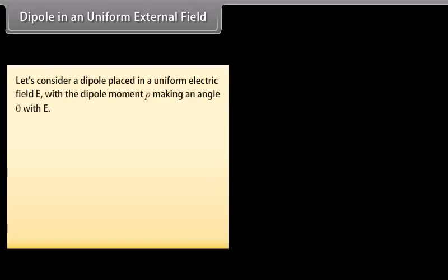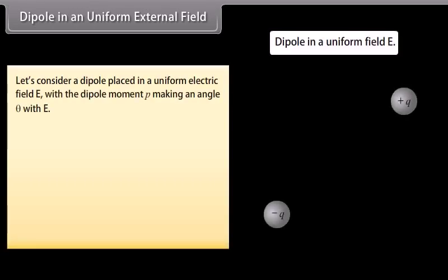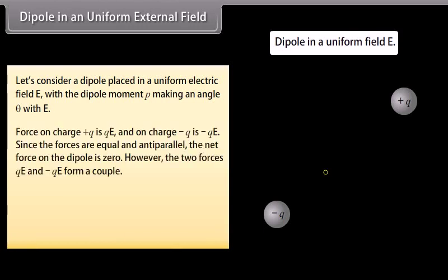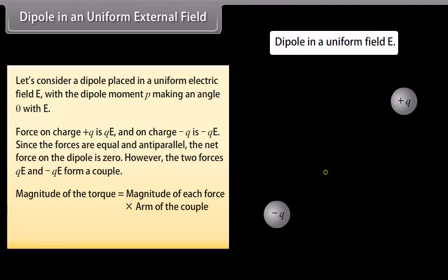Dipole in a uniform external field: consider a dipole placed in a uniform electric field E with the dipole moment p making an angle θ with E. The force on charge +q is qE and on charge −q is −qE. Since the forces are equal and antiparallel, the net force on the dipole is zero. However, the two forces form a couple. The magnitude of the torque equals the magnitude of each force times the arm of the couple, which can be written as τ = p × E.